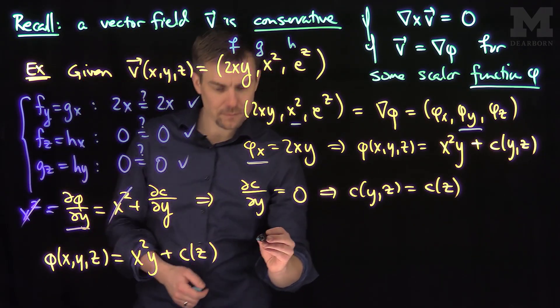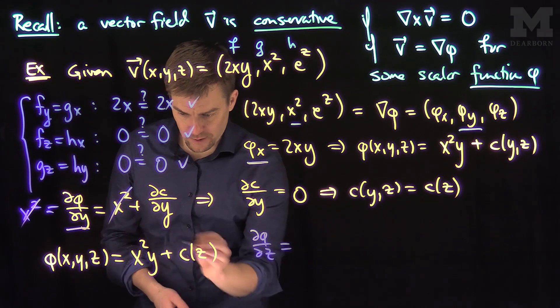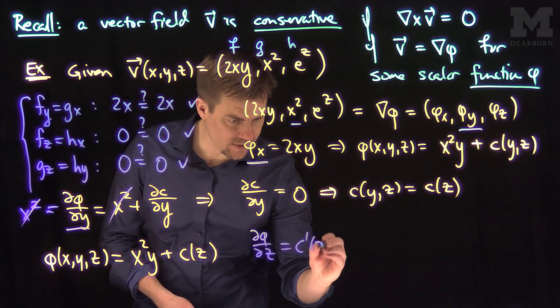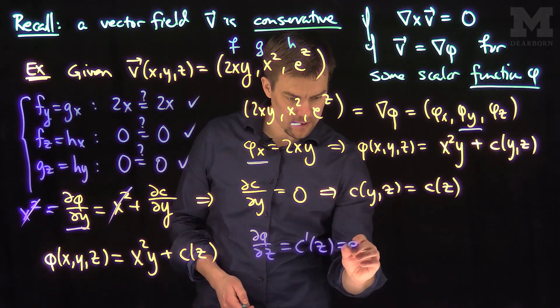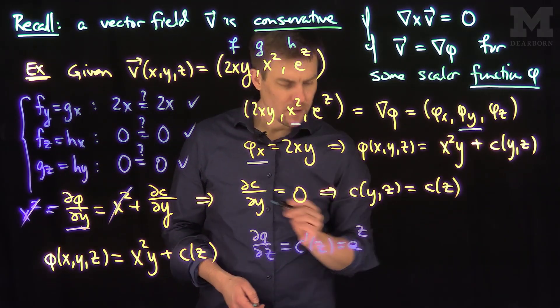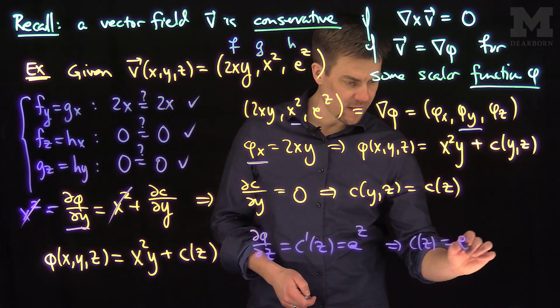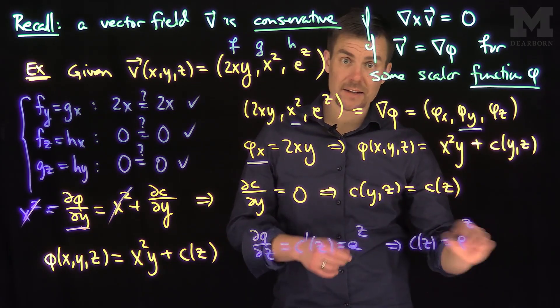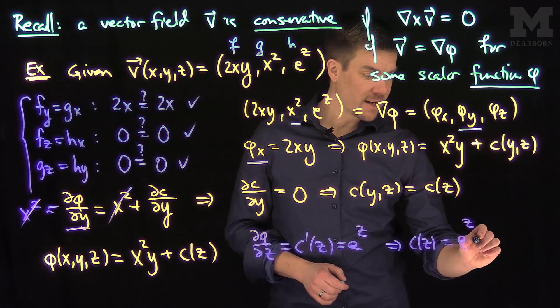So partial phi partial Z. According to this formula, that's going to be gone. It's just going to be C prime of Z. So C prime of Z has to be equal to what? Well, C prime of Z has to be E to the Z. So that tells me that C of Z is equal to E to the Z plus a constant. And this is the constant which can be whatever you want. Shifting a potential function by a constant doesn't change it at all.